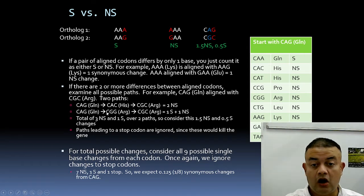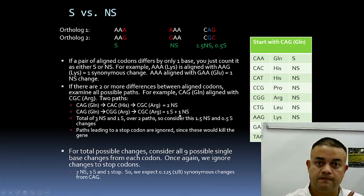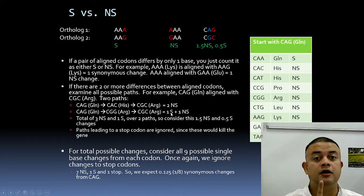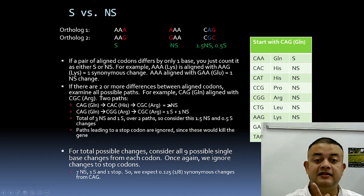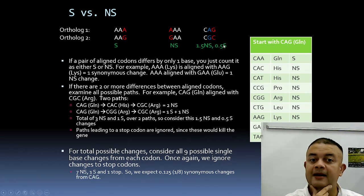Path two: CAG (glutamine) changes to CGG (arginine) — a non-synonymous change — then CGG changes to CGC (arginine) — a synonymous change. So path two has one non-synonymous and one synonymous mutation. Across two paths: three non-synonymous and one synonymous total. On average per path: 1.5 non-synonymous and 0.5 synonymous mutations.